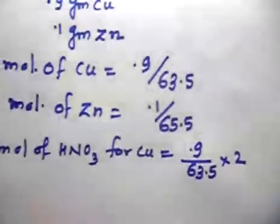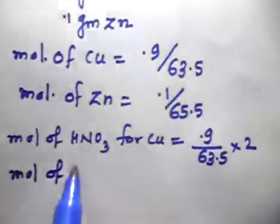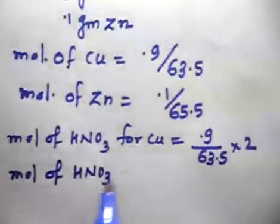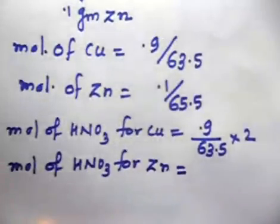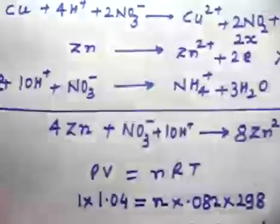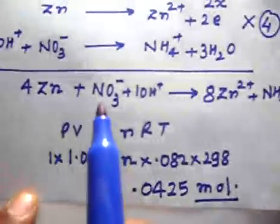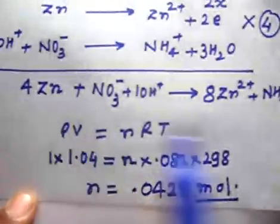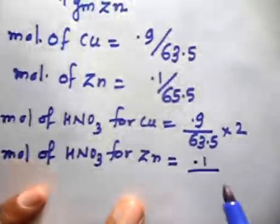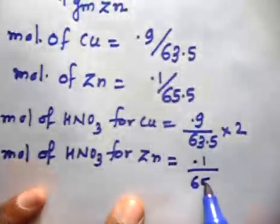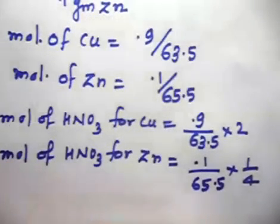From the zinc balanced equation, 4 moles of zinc requires 1 mole of NO3⁻, so 1 mole of zinc requires 1/4 mole of HNO3. Moles of HNO3 for zinc = (0.1 / 65.5) × (1/4). This gives the total moles of HNO3 required.